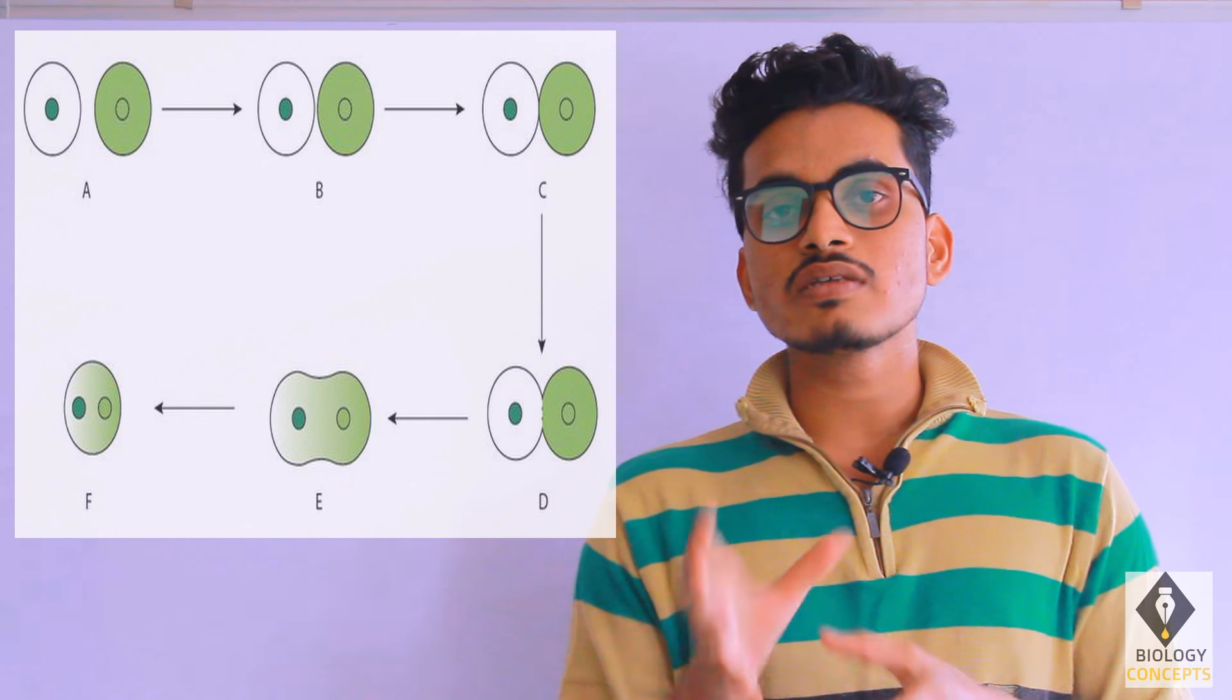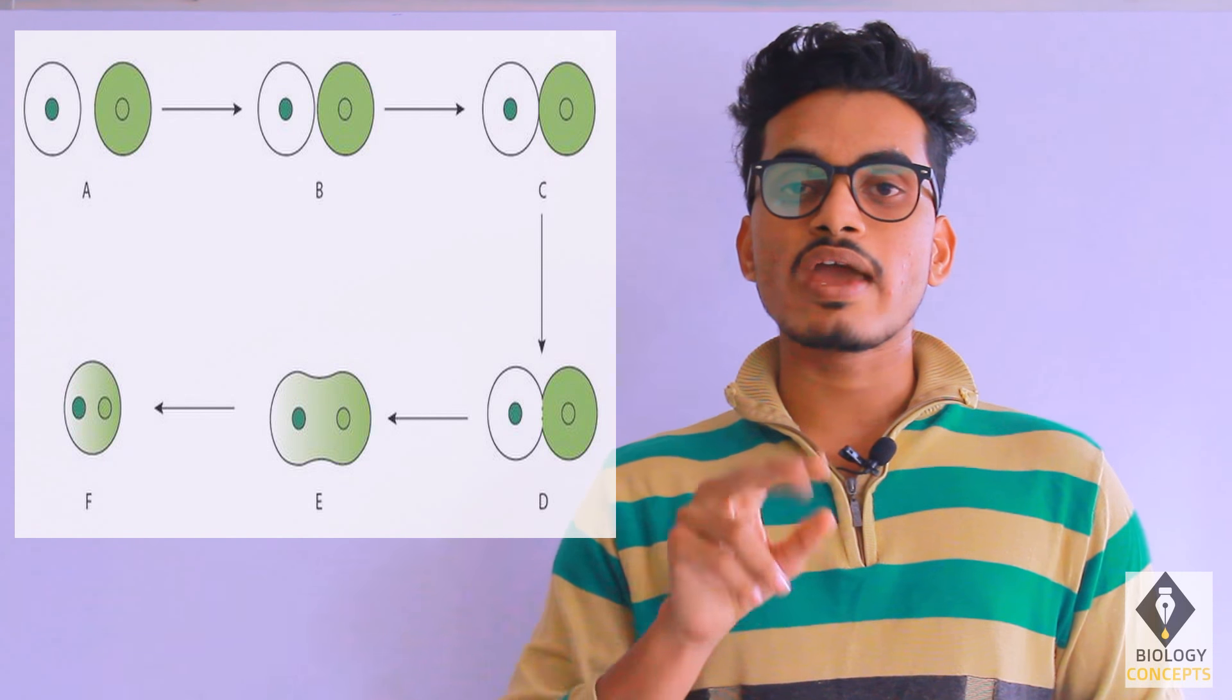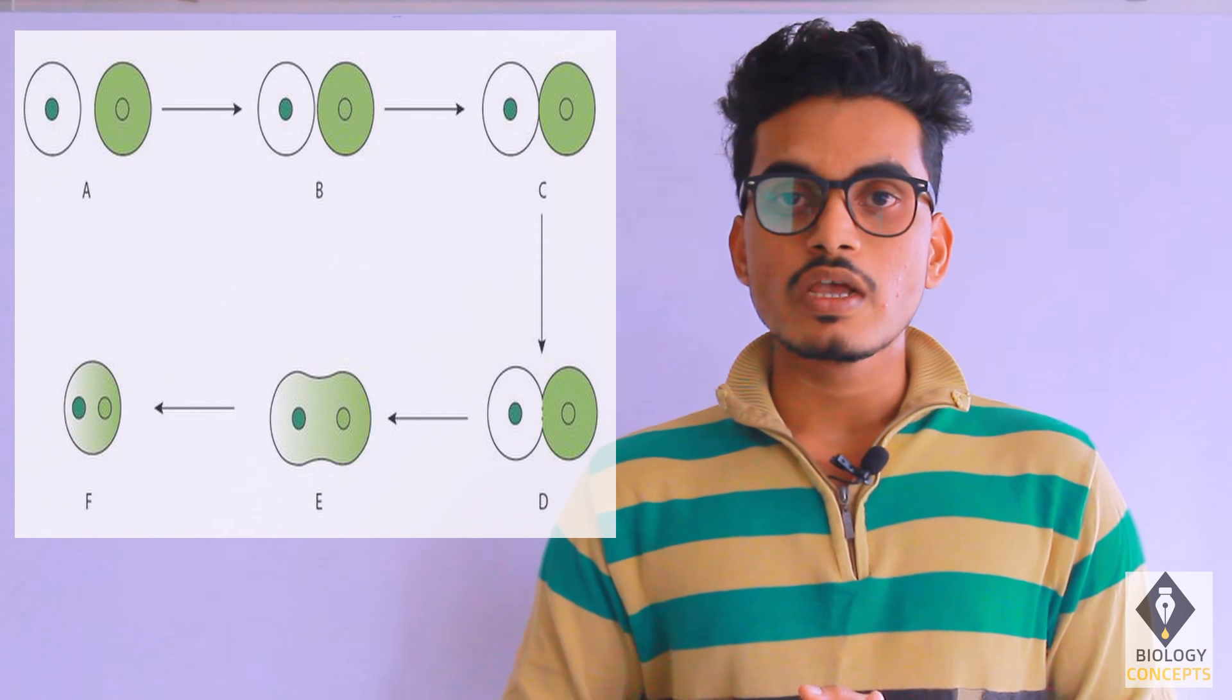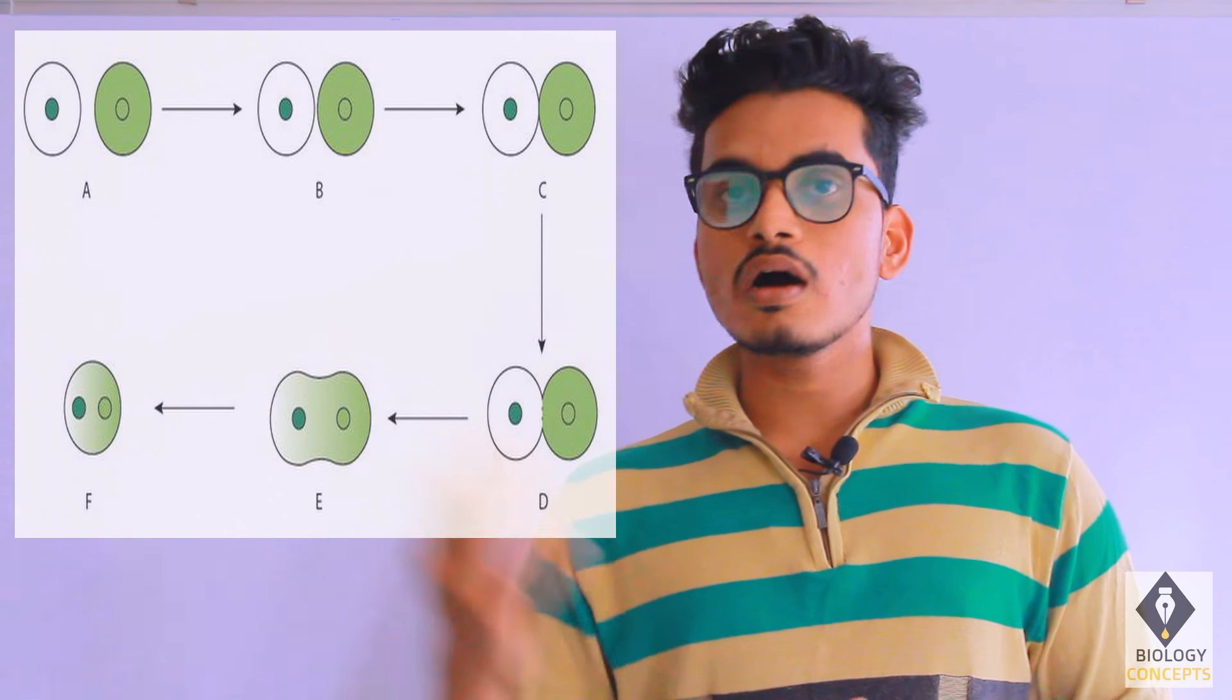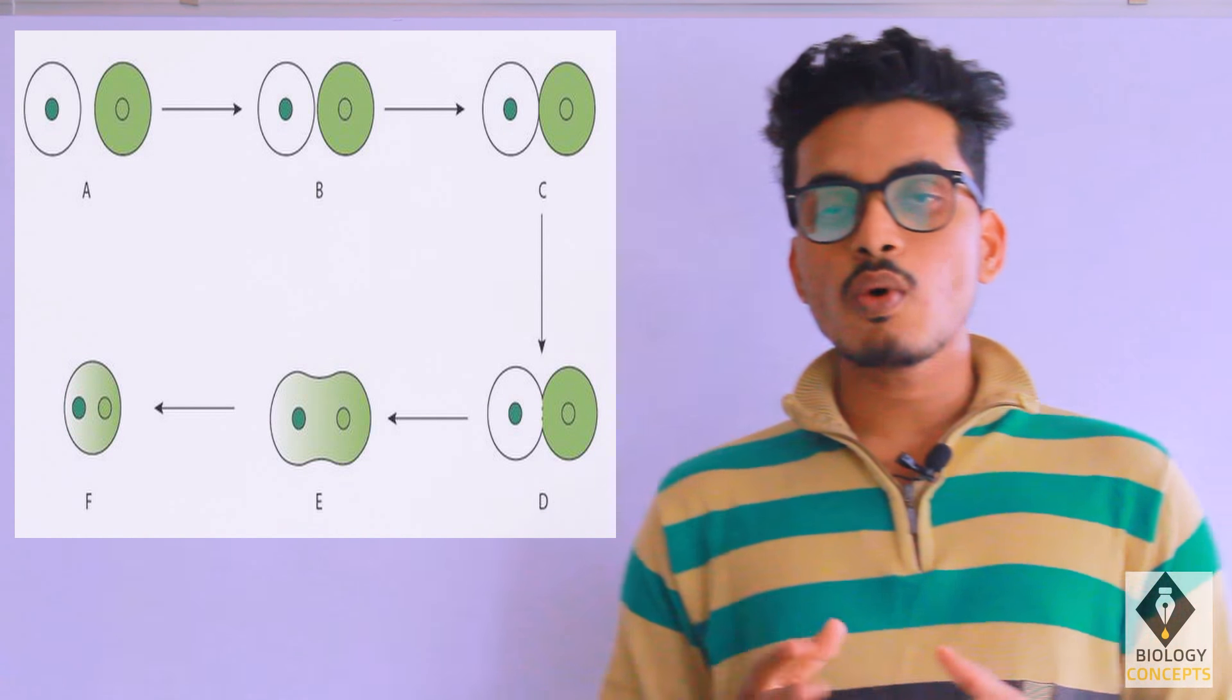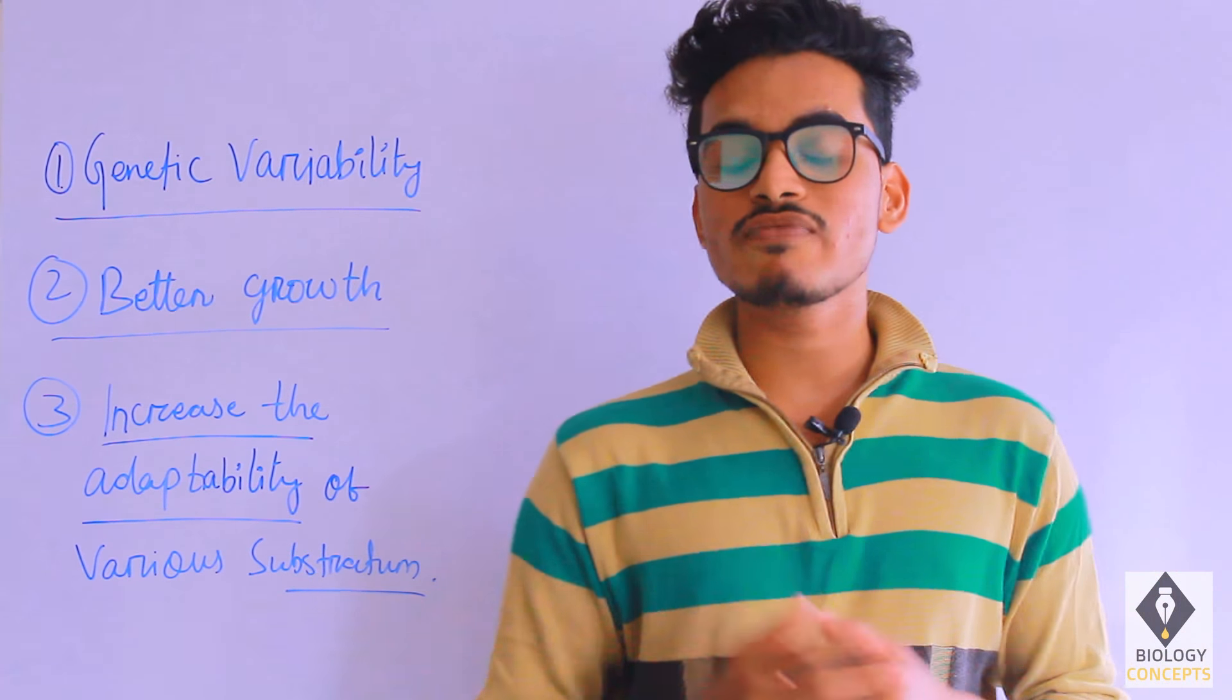So here what happens is a single cell is there. Inside the single cell we have two nuclei. These two nuclei, one is from one species, one is from another species. This condition of the cell is called heterokaryosis. Now we are going to discuss the benefits we get in the case of heterokaryosis.